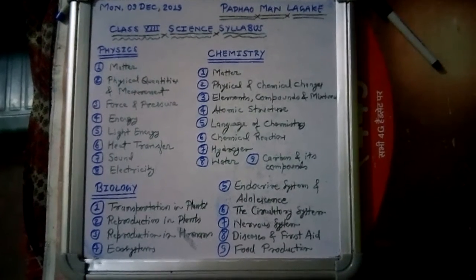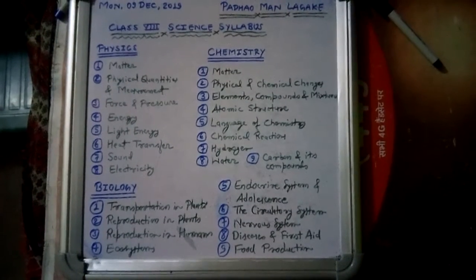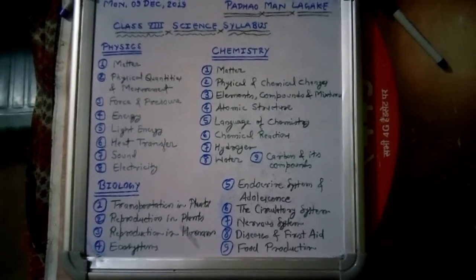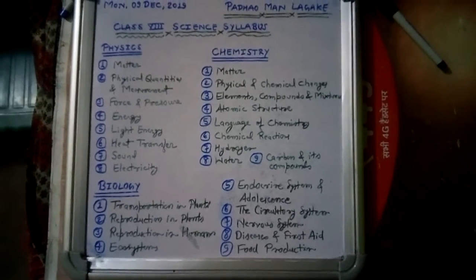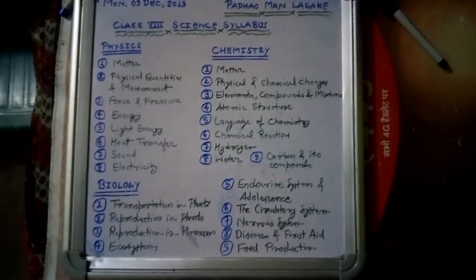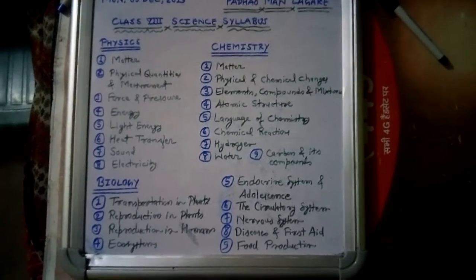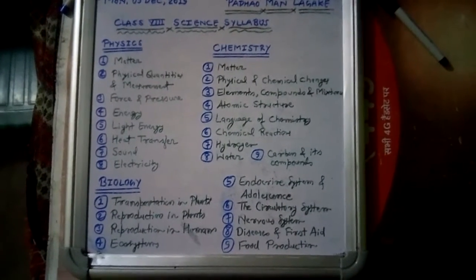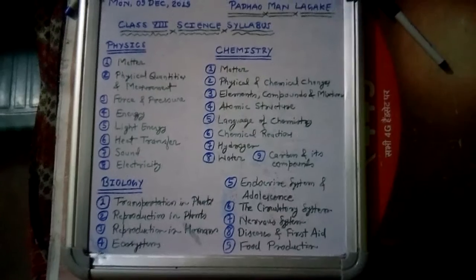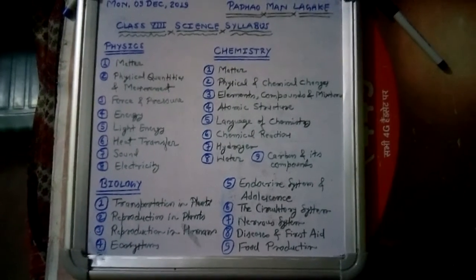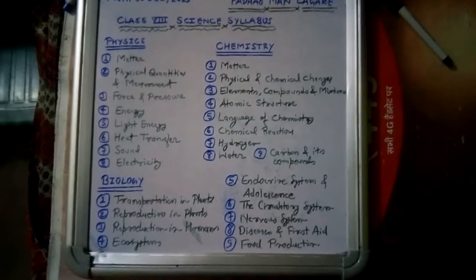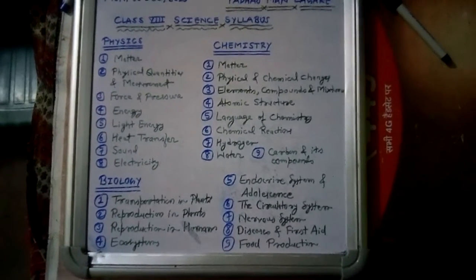In chemistry, Chapter 5: Language of Chemistry is very, very important. Chapter 6: Chemical Reactions and Chapter 9: Carbon and Its Compounds — these three chapters are very, very important for higher study.